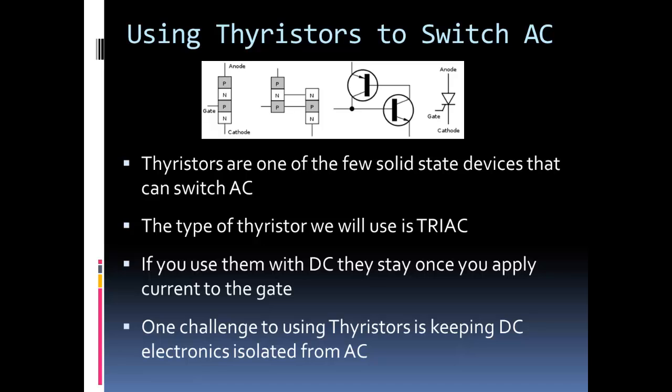One thing to note though is they're not good for DC. In fact, if you use it for a DC signal, it'll work at first. When you apply a voltage to the gate, the thyristor will turn on, but you won't be able to turn it off even if you remove the gate voltage. Another challenge using a thyristor as a switch is whether you're using an Arduino or any type of digital control or microcontroller, you want to keep your DC digital away from your AC signals. You want to keep them isolated.